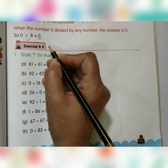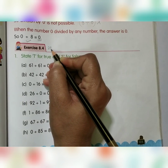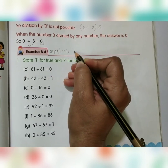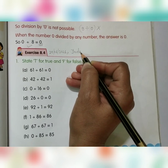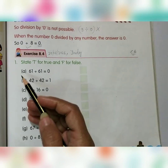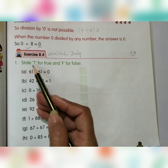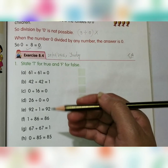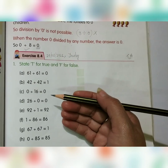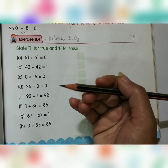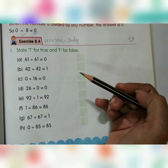Now let's continue with Exercise 8.4. Write down the date again: 29th January 2021, Friday. This is your classwork. Question number 1: State T for True and F for False. We have to answer these questions. Whatever statement is correct, we will write T. Whatever statement is wrong, we will write F.